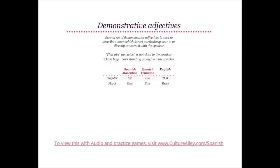Let us move on to the next set of demonstrative adjectives. The second set is used to describe a noun which is not particularly near to or directly concerned with the speaker. In English, we use 'that' and 'those' for such cases. For example, 'that girl' will refer to a girl who is not in close vicinity to the speaker. Similarly, 'those boys' will refer to boys who are standing away from the speaker.